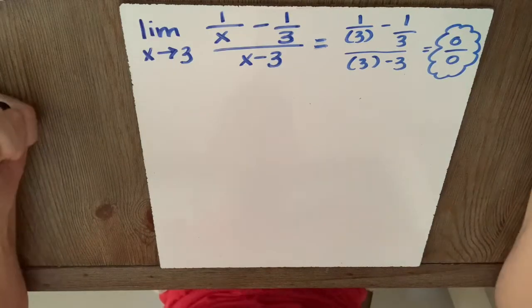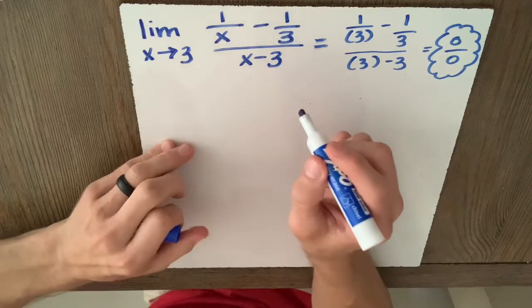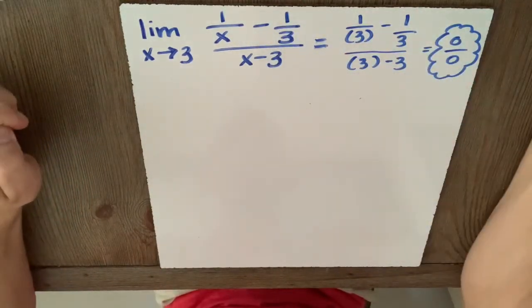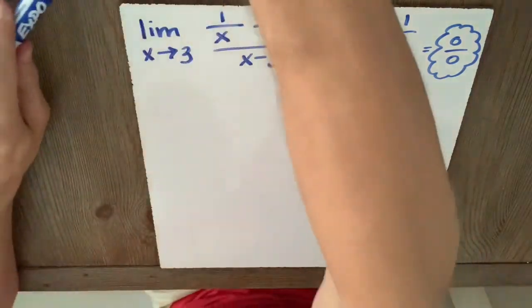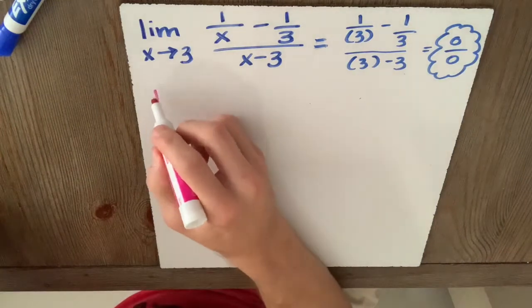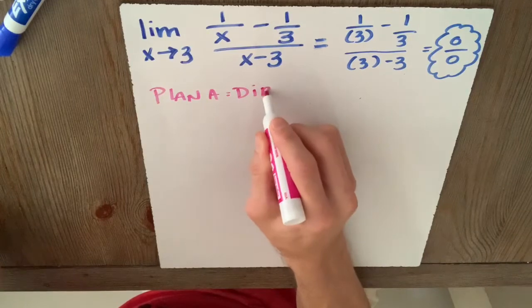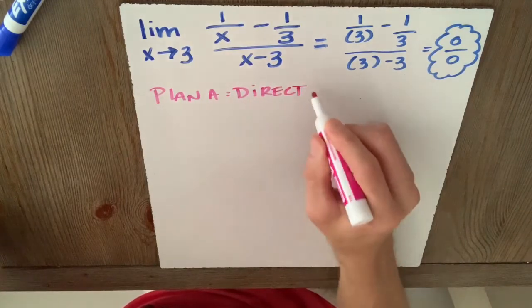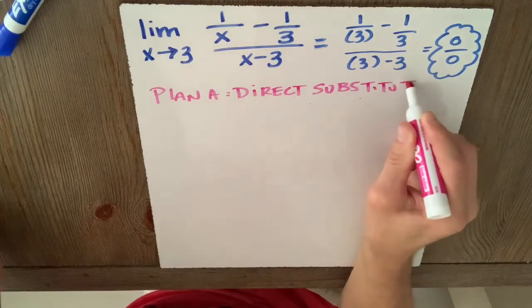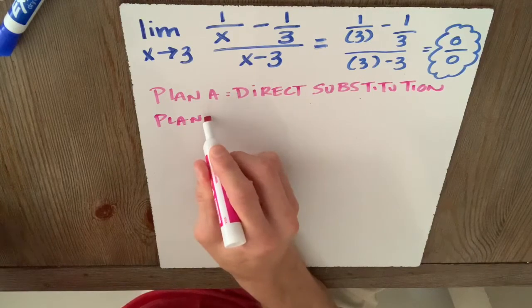That was our plan A, so we better have a plan B. Notice that I have a fraction or a set of fractions over a fraction. So in the past, what we've done for plan B, well of course plan A was direct substitution. And we've talked about different plan B's.